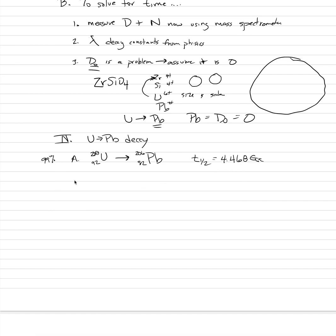There's another decay scheme that occurs with uranium, possibly in zircon: uranium-235 also decays through a series of steps to lead-207. The half-life for this is a little faster — around 704 million years.